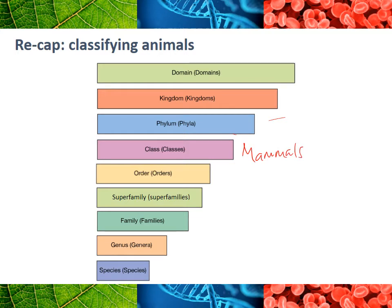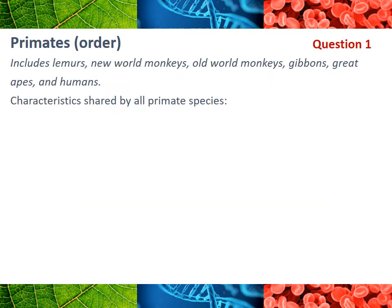For example, a class would be mammals. With human evolution, we're basically just looking from that point down, focusing on how we classify different species in those areas. The order we're concerned with in this topic is primates. Primates include lemurs - which you may remember from Madagascar - new world monkeys, and old world monkeys. Old world monkeys are found in Asia and Africa; new world monkeys are found in South America.